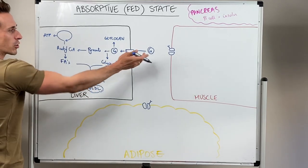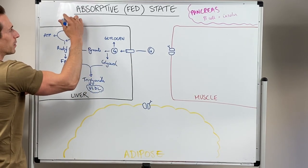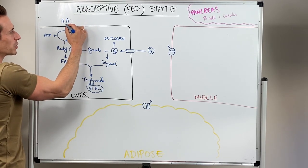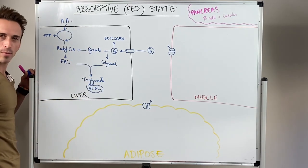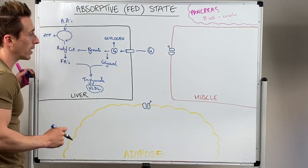Another thing that can happen is amino acids that we've got can be absorbed in the liver as well, and they can actually just enter the Krebs cycle, this cycle that produces the ATP from acetyl-CoA.